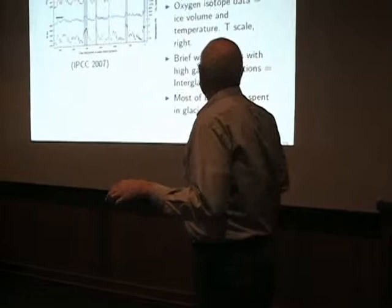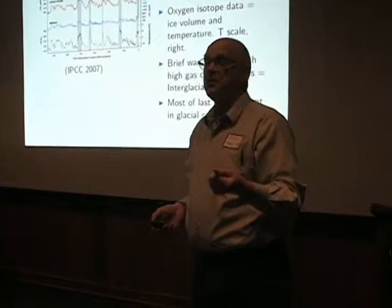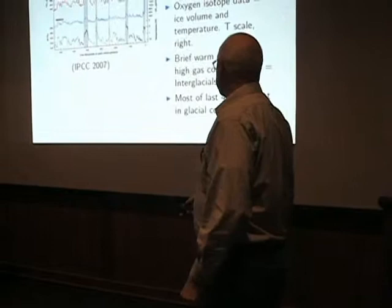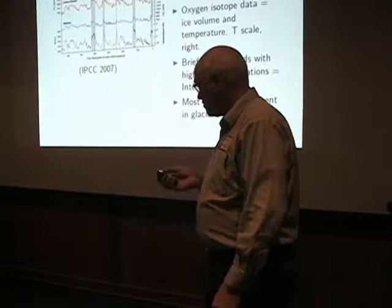The oxygen isotope data — the bottom curve — gives us a way to calibrate how much ice there is on the Earth and how much the temperature varies. There's a temperature scale there that goes over a range of 16 degrees Fahrenheit — a pretty substantial change between glacial and interglacial times. We're in one of those brief interglacial periods now. The gas concentrations are high. It's not a coincidence.